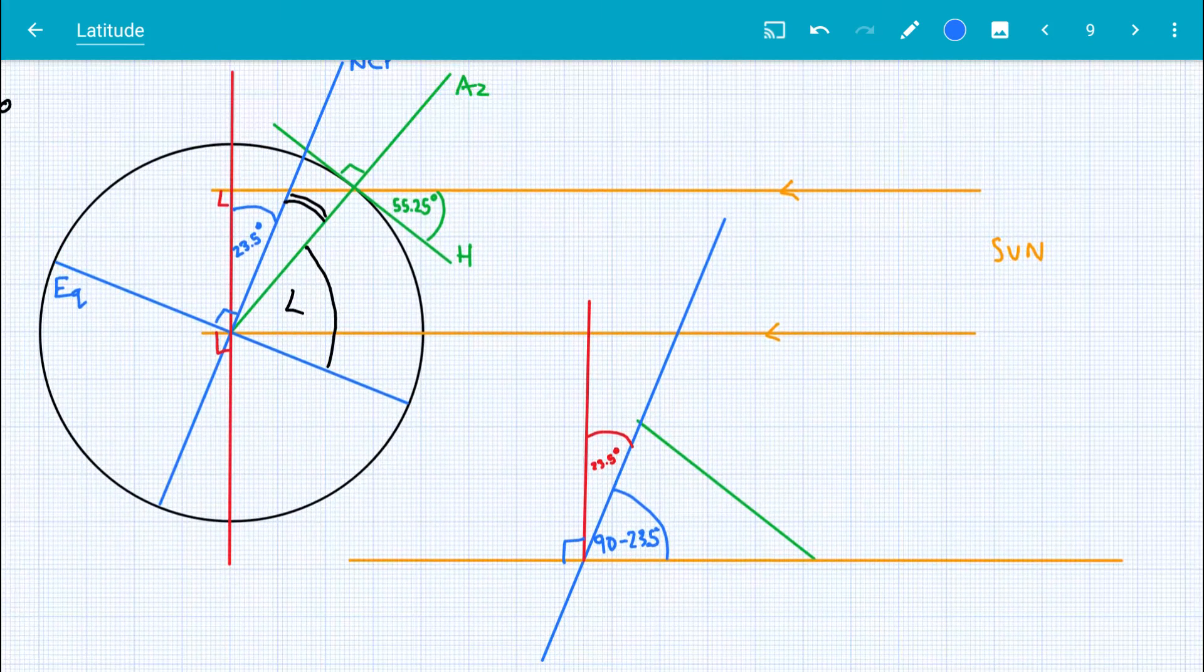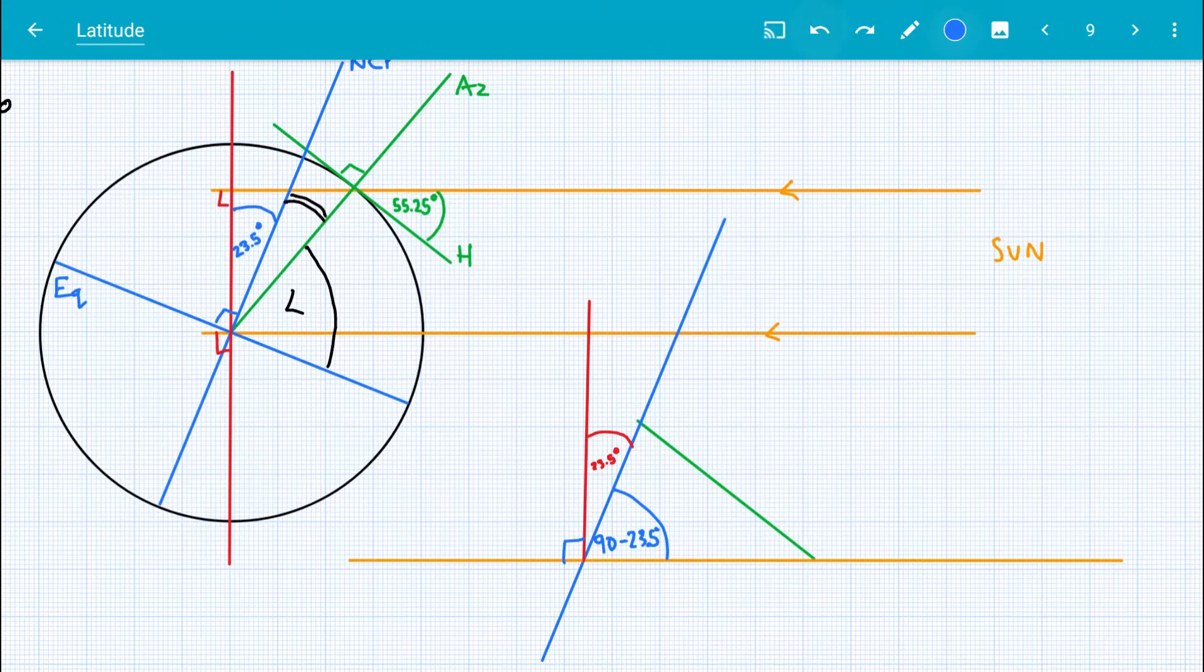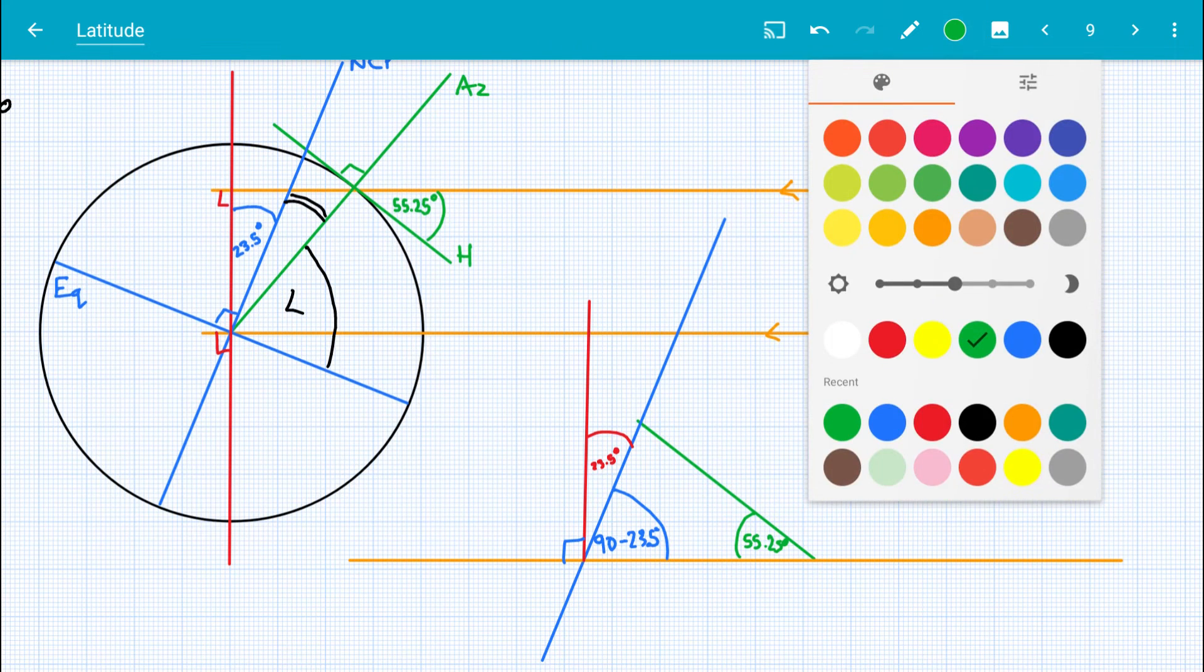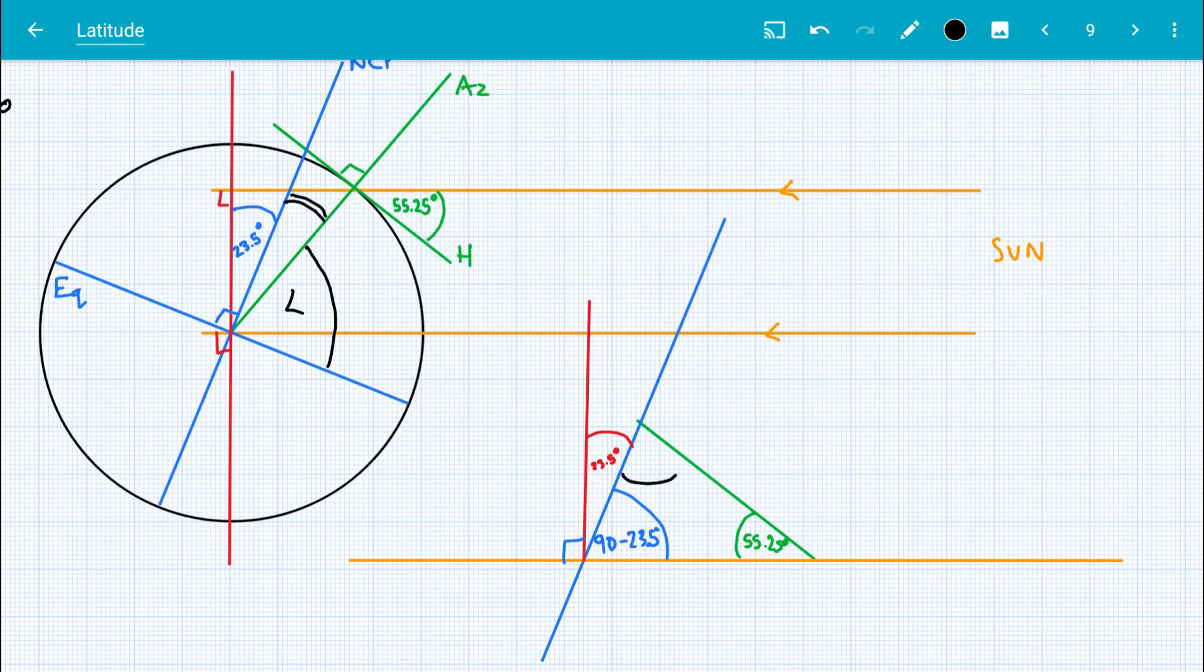Then we look over here. Do we know what this angle here is? Yes, it is a complementary angle. The angle between the horizon and the ray, that's 55.25 degrees.